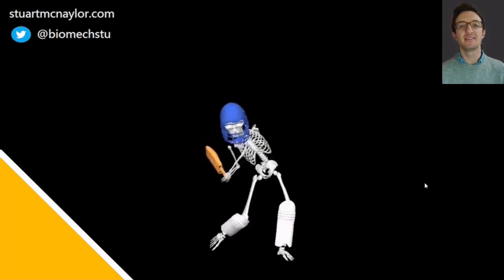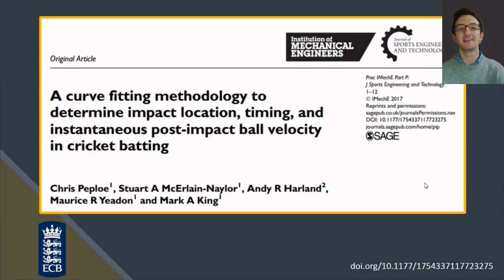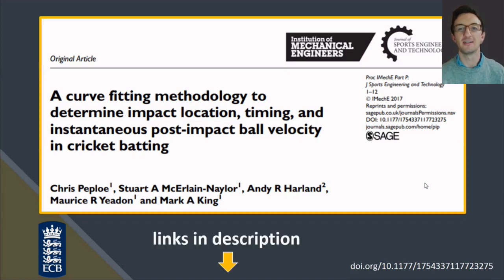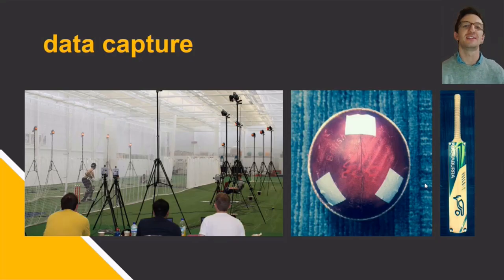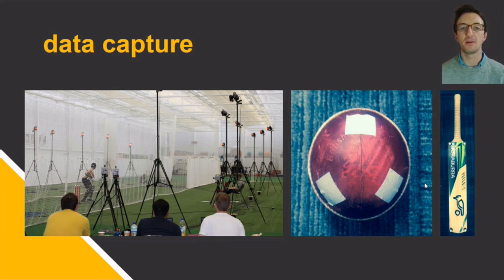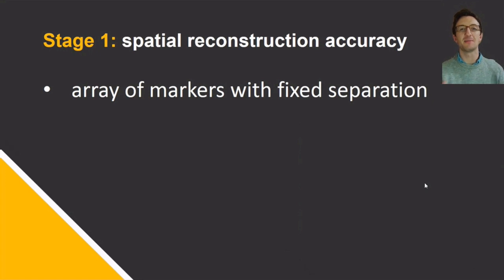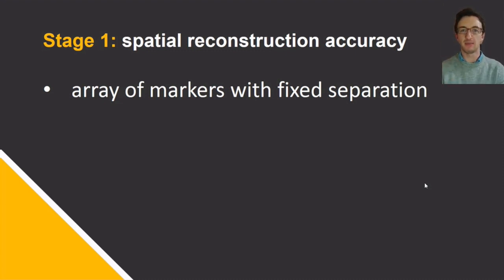We applied many of these same methods to power hitting in cricket. The first of a series of studies applied the curve-fitting methodology to calculate impact locations in cricket. We had four markers on the back corners of the bat, as well as five sections of reflective tape on the cricket ball, and used Vicon motion capture cameras. We took a multi-stage approach: in stage one, we passed an array of markers of fixed separation through the capture volume to assess spatial reconstruction accuracy before adding layers of complexity.